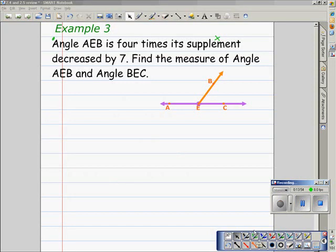Example three: Angle AEB is four times its supplement decreased by seven. Find the measure of angle AEB and angle BEC.